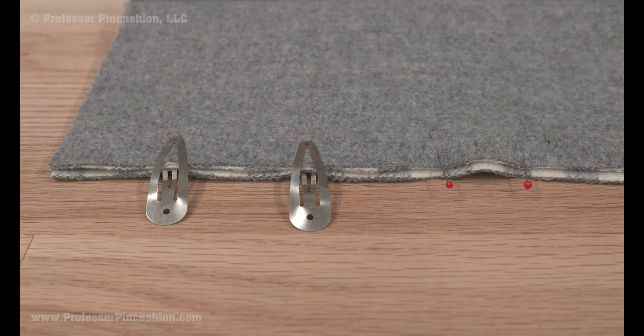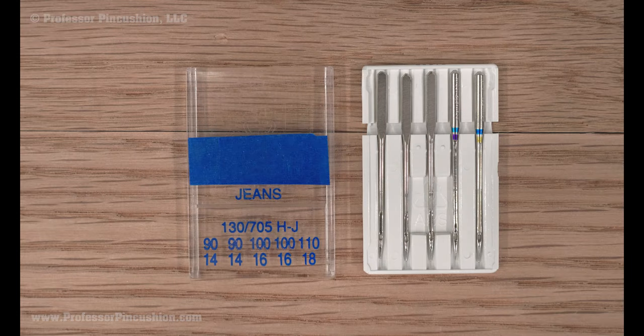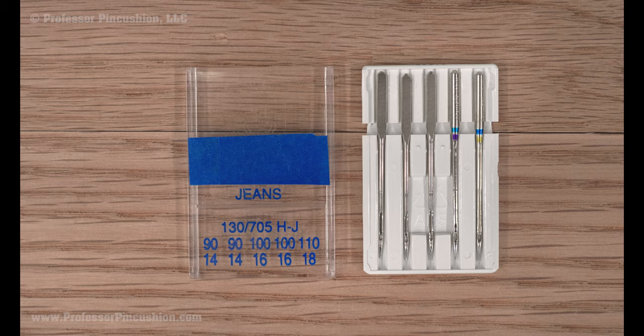Sometimes straight pins can make pinned areas more bulky so consider using clips instead. Make sure you're using the right size needle. For thicker fabrics or lots of layers, you can use a size 90/14 or 11/6 for a stronger needle.